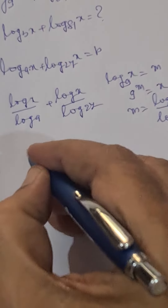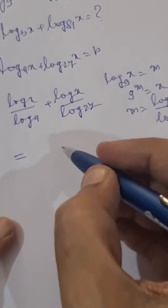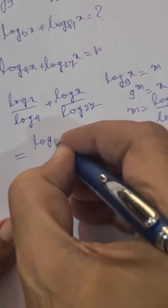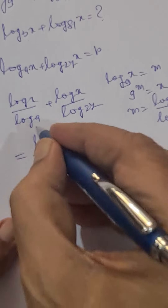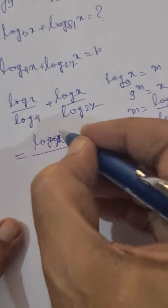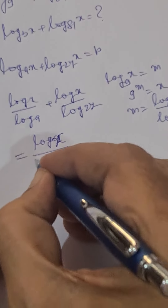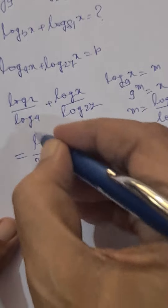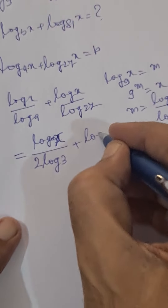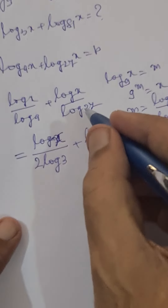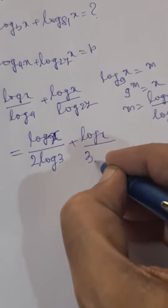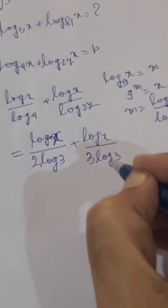We can further simplify this: log x divided by log 9. Since 9 is 3 squared, log 9 equals 2 log 3. Plus log x divided by log 27 — since 27 is 3 cubed, log 27 equals 3 log 3.